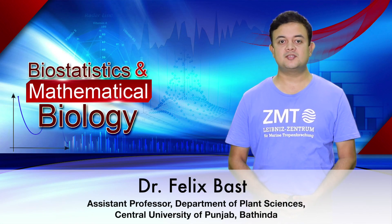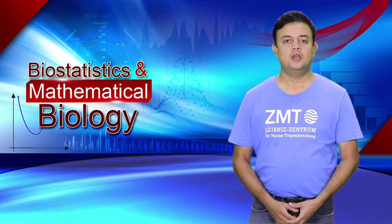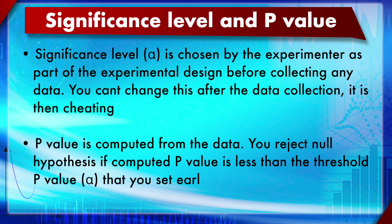Module 13: Statistical Significance and P-values, Section 1. The significance level, also known as alpha or threshold, is chosen by the experimenter as part of the experimental design before collecting any data. The p-value, by contrast, is computed from the data after completing the experiment. Alpha involves no computation — it is simply decided as an arbitrary value during study design.